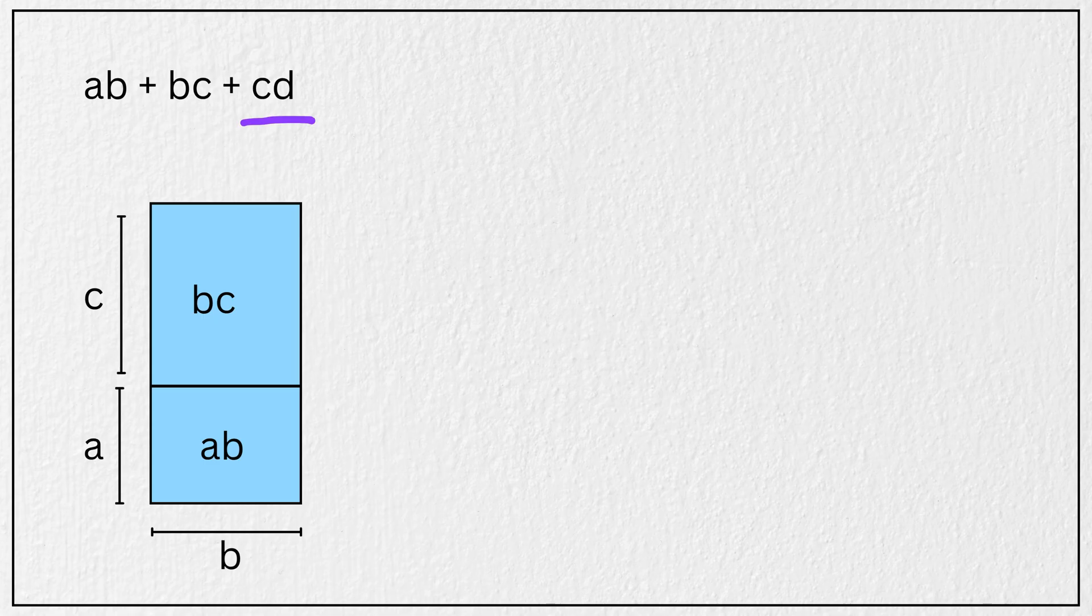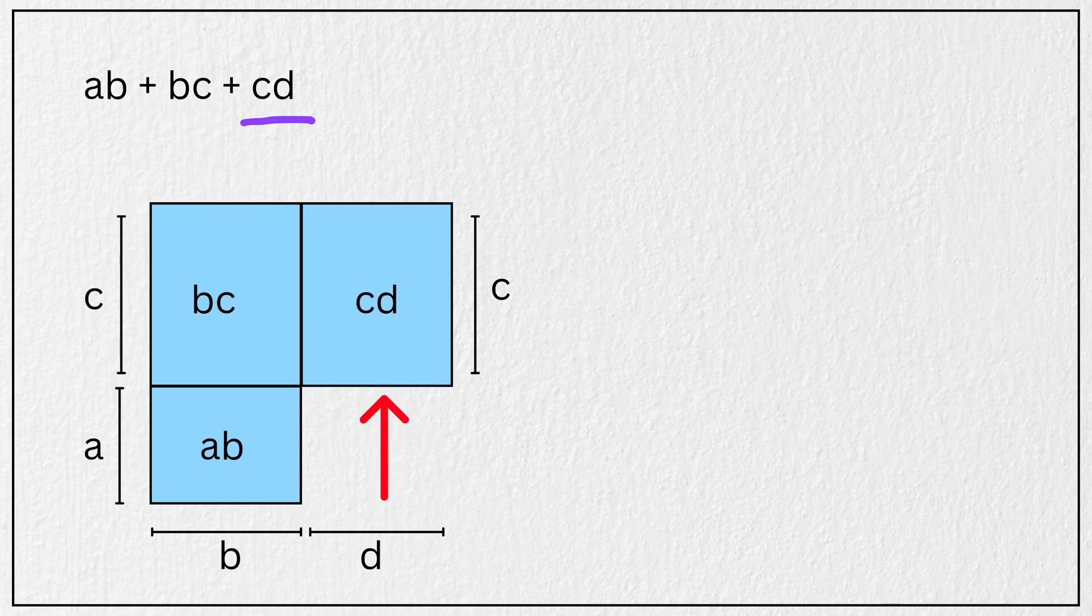And finally, to represent C times D, we build one more rectangle by adding a strip with length C and width D. That gives us the area C times D.